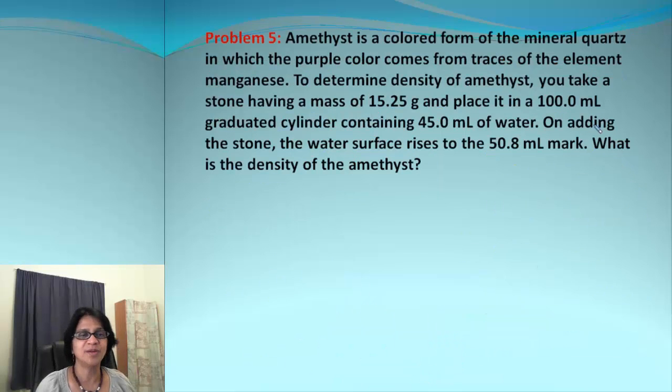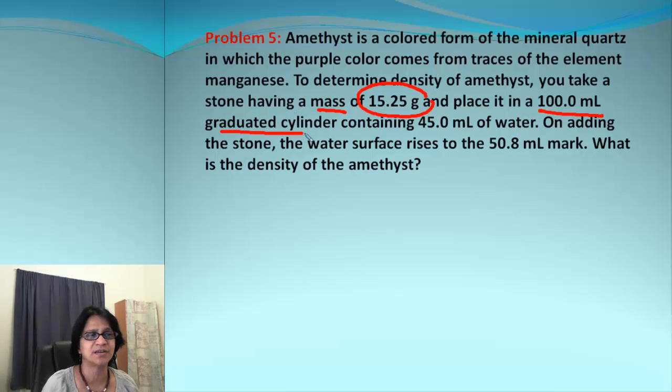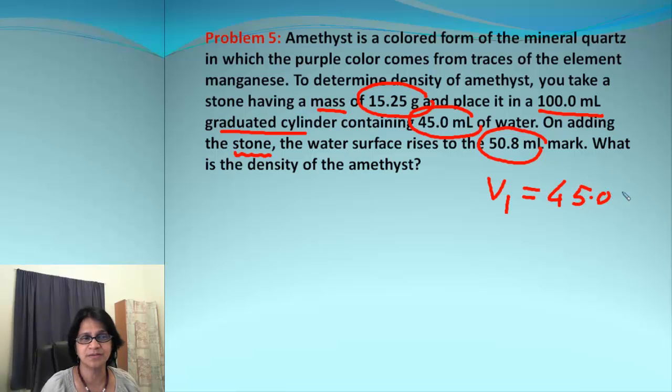In this problem, we have been given the mass of a substance, 15.25 grams. But the volume is not given directly. It says 100 milliliter graduated cylinder - that's just the capacity. We have 45.0 milliliters of water initially. After we add the stone, we get 50.8 milliliters. So V1 is 45.0 without the stone, and after adding the stone it's 50.8 milliliters.